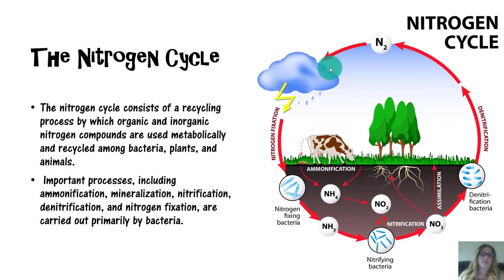The nitrogen cycle consists of a recycling process by which organic and inorganic nitrogen compounds are used metabolically and recycled among bacteria, plants, and animals. Important processes include ammonification, mineralization, nitrification, denitrification, and nitrogen fixation — all of these are carried out primarily by bacteria.